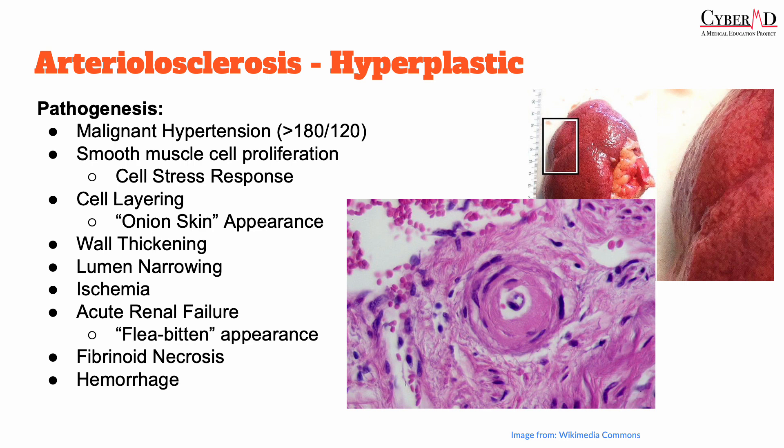The second type, hyperplastic arteriolosclerosis, is a byproduct of malignant hypertension — excessively high blood pressures, typically greater than 180 over 120. Instead of pushing protein out into the walls of the vasculature, in this pathology the body responds with the proliferation of smooth muscle cells as a response to the large amounts of stress being placed on the walls of the vasculature.